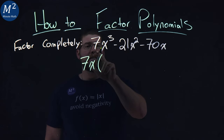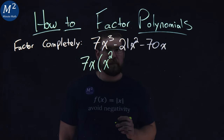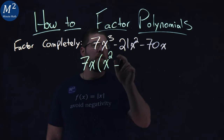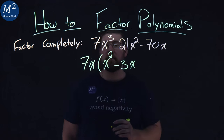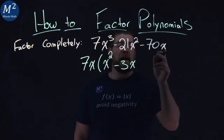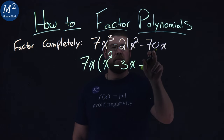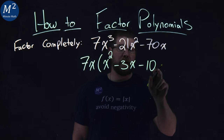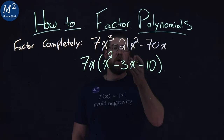If I pull out a 7x out of 7x cubed, I'm left with just an x squared. From there, 7 out of 21 is a 3, and then x out of x squared is just an x. The last part, minus 70x — 70 divided by 7 is a 10. We pull out the x, and we're left with no x remaining. So now we've pulled out a 7x from all parts.